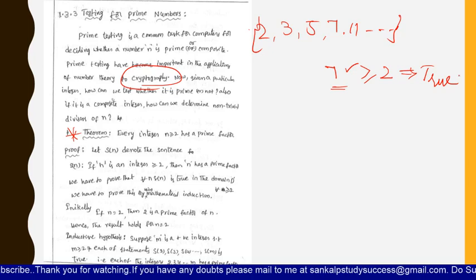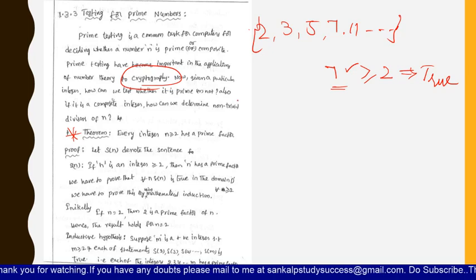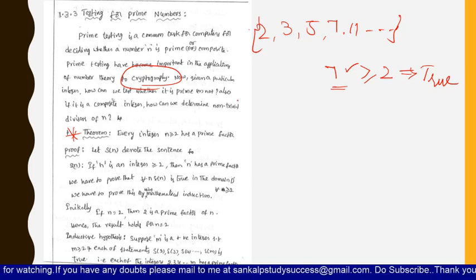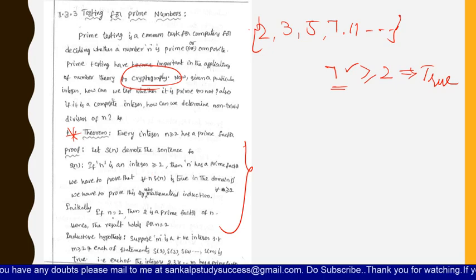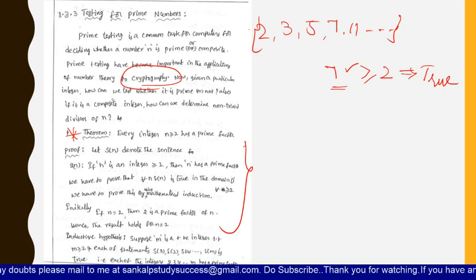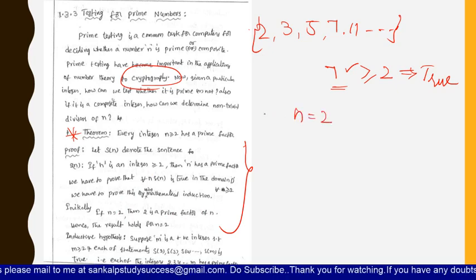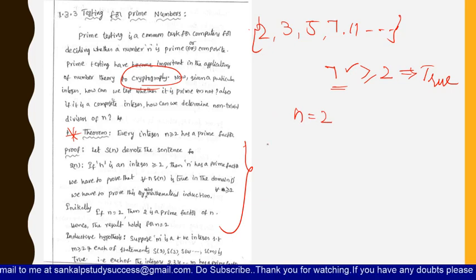Let us prove that every number greater than or equal to 2 has a prime factor. We prove this theorem using mathematical induction. Initially, if n equals 2, then 2 is a prime factor of n. So for n equals 2 — step one — 2 is a prime factor of n.